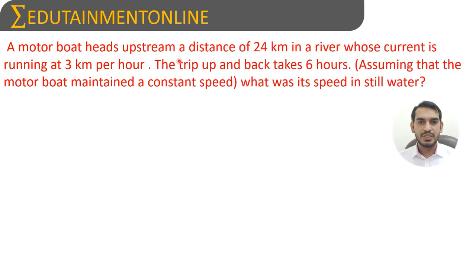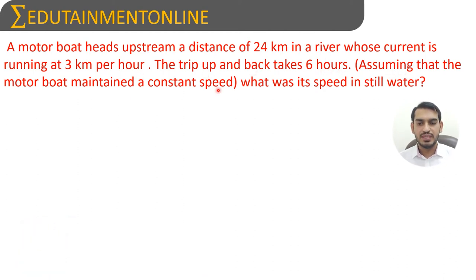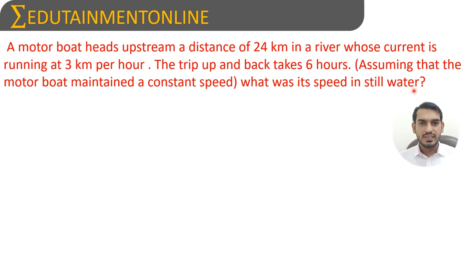A motorboat heads upstream a distance of 24 kilometers in a river whose current is running at three kilometers per hour. The trip up and back takes six hours. Assuming that the motorboat maintained a constant speed, we need to find the speed of the boat in still water.